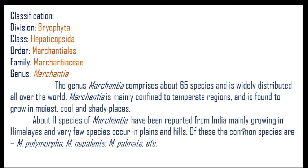We start with the classification. Genus Marchantia is included in division Bryophyta, then classified into class Hepaticopsida, included in order Marchantiales, family Marchantiaceae, genus Marchantia. The genus Marchantia comprises about 65 species with worldwide distribution, mainly confined to the temperate cool zones, growing in moist, cool and shady places.